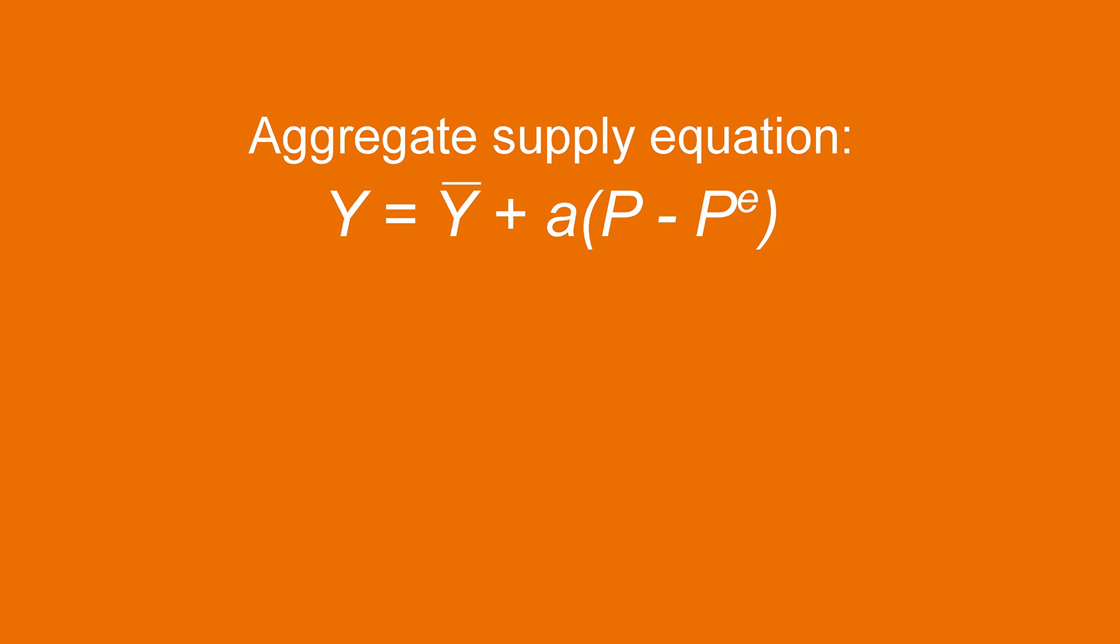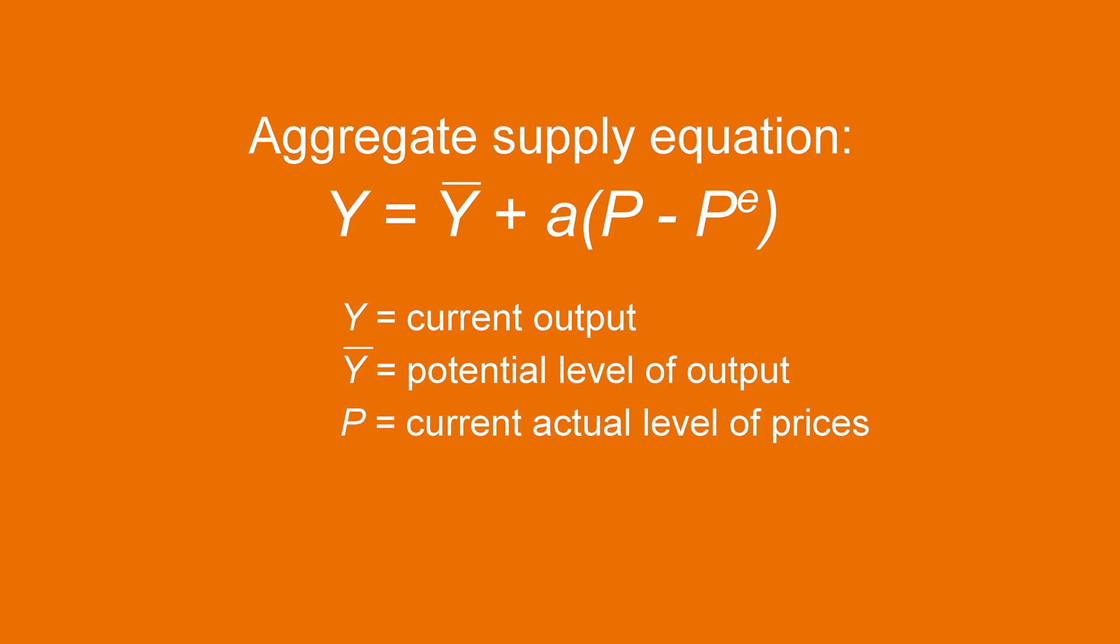Now, let us go through a mathematical model of aggregate supply. We can summarize the aggregate supply relationship using a simple equation. Y equals to YBAR plus A times P minus PE. Y indicates current output. Y bar is the potential level of output. P is current prices, and PE represents expectations of the price level.